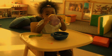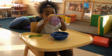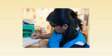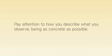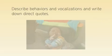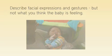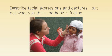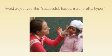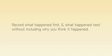If I record these notes, am I describing something about the baby? Or am I really describing my own opinion about the baby? By removing interpretation and focusing on the facts, you create a much more solid picture of the skills this baby is showing you. In objective observation, it's helpful to focus on what you record in your notes. Pay attention to how you describe what you observe, being as concrete as possible. Describe behaviors and vocalizations and write down direct quotes. Describe facial expressions and gestures, but not what you think they mean about how the baby might be feeling. Avoid using adjectives like successful, happy, mad, pretty, or hyper. Record what happened first and what happened next without including why you think it happened.